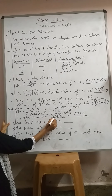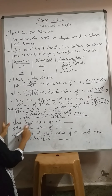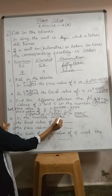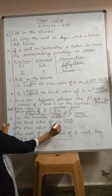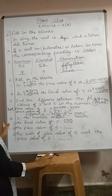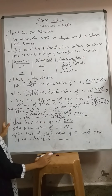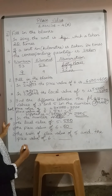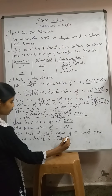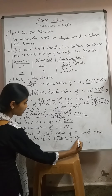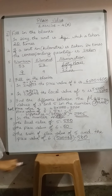Next, in the number 40,562, the place value of 5 is dash. Circle the 5 — it is at the 100's place, so the place value is 500. The place value of 6: 6 is at the 10's place, so it is 60. The sum of the place values of 5 and 6 is 500 plus 60, which equals 560.